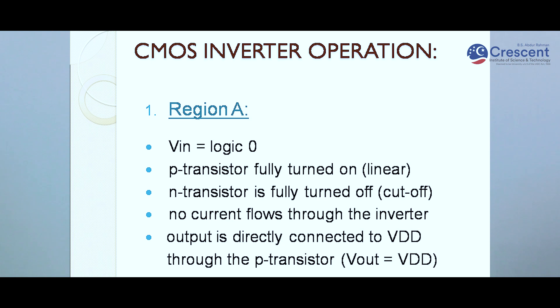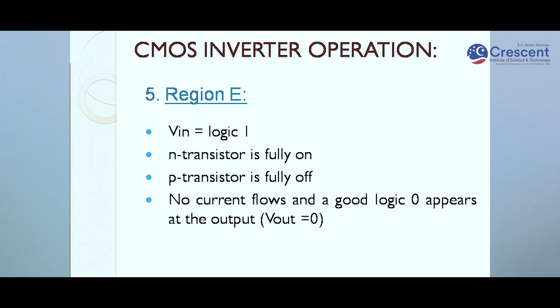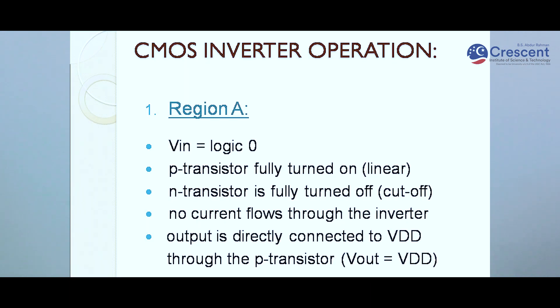In region A, the P device is on and the N device is off. In region E, P is off and N is on. In regions B, C, and D, both transistors are on. In region A, where VIN equals logic zero, the P transistor is fully on in the linear region and the N transistor is fully off in cutoff. No current flows, and the output is directly connected to VDD through the P transistor, so VOUT equals VDD.